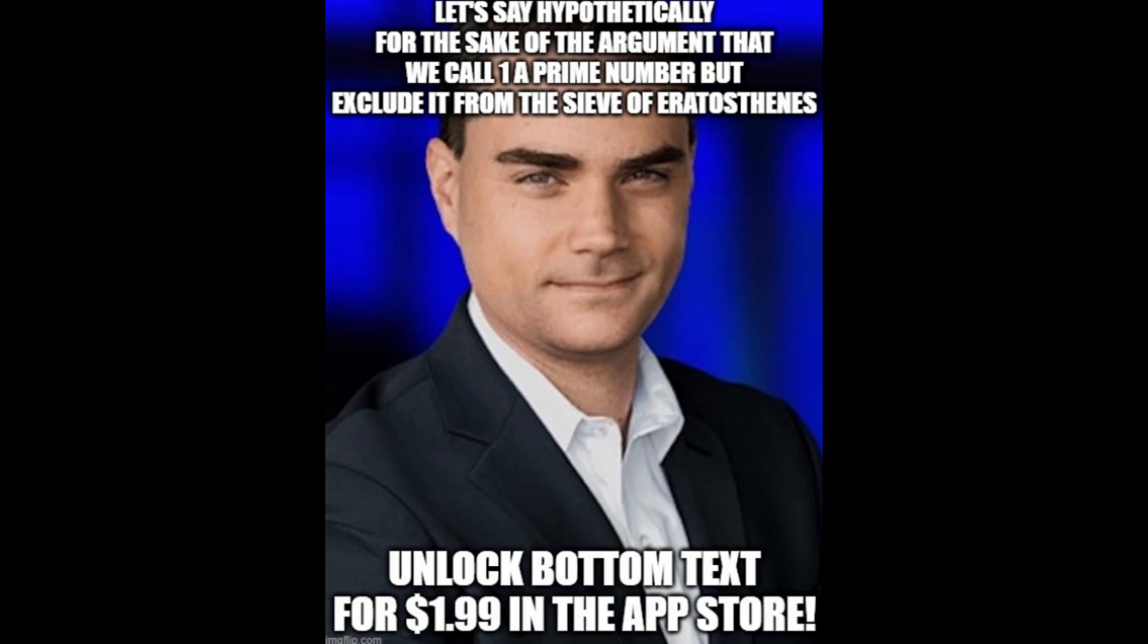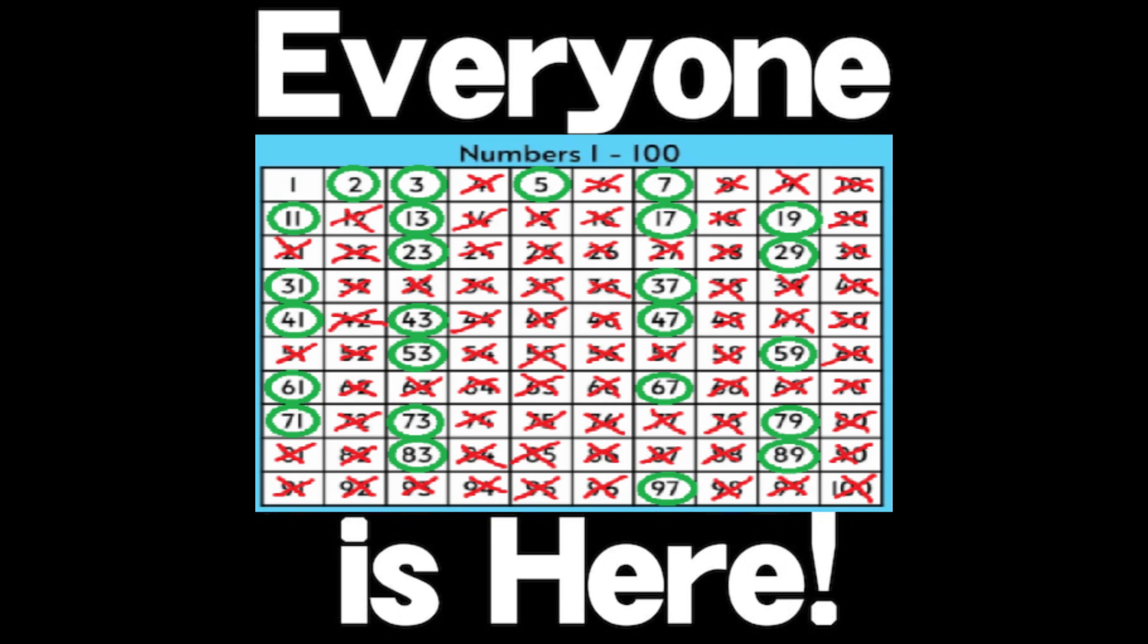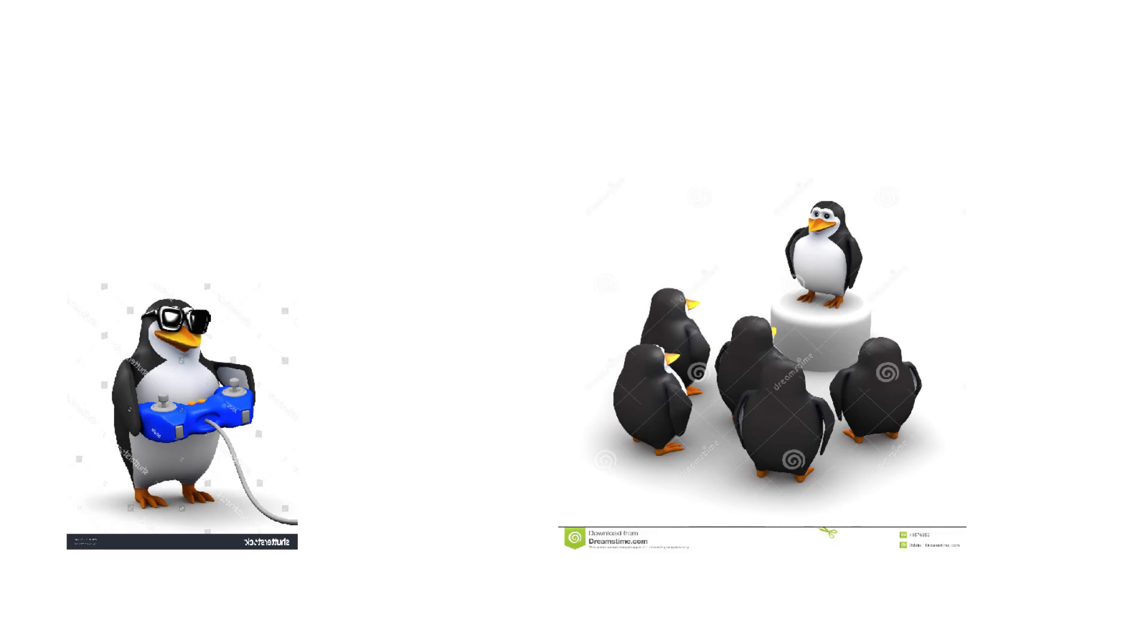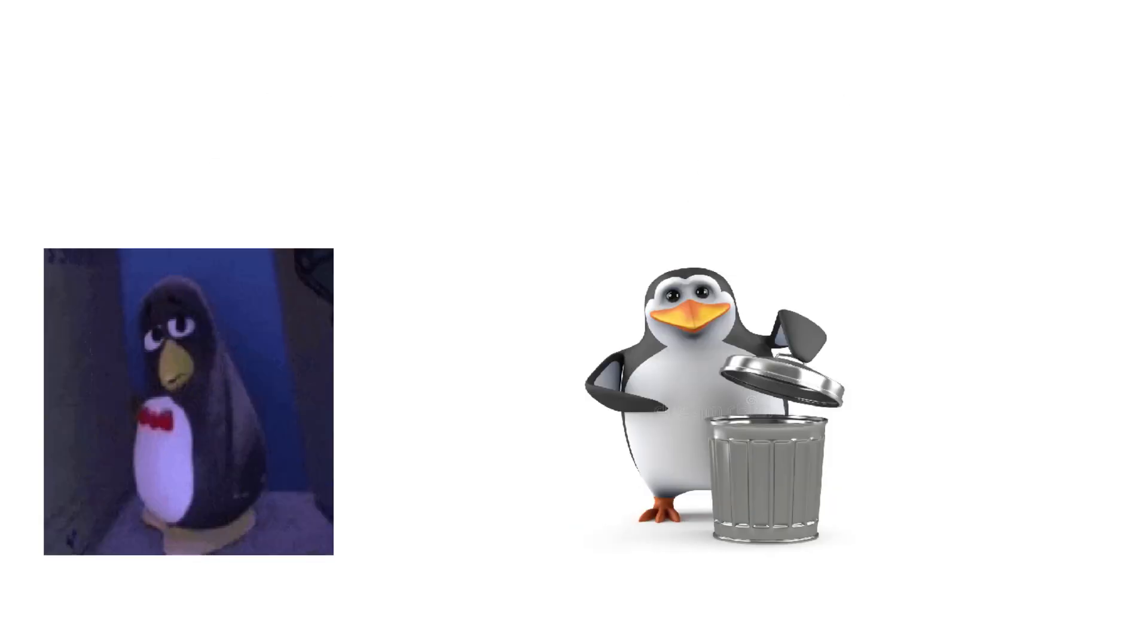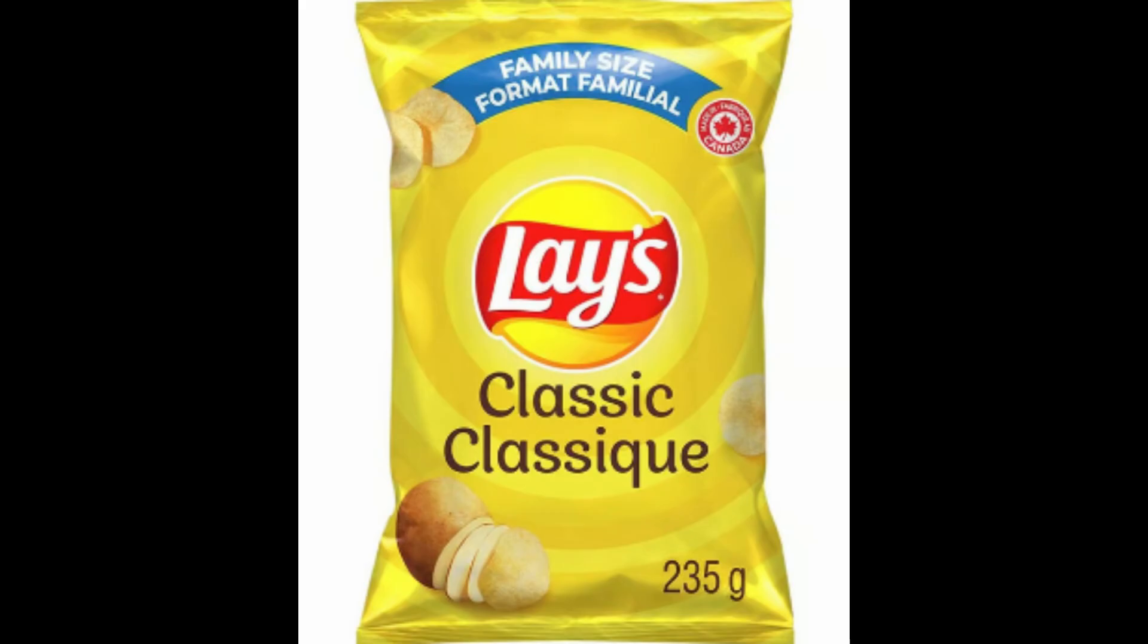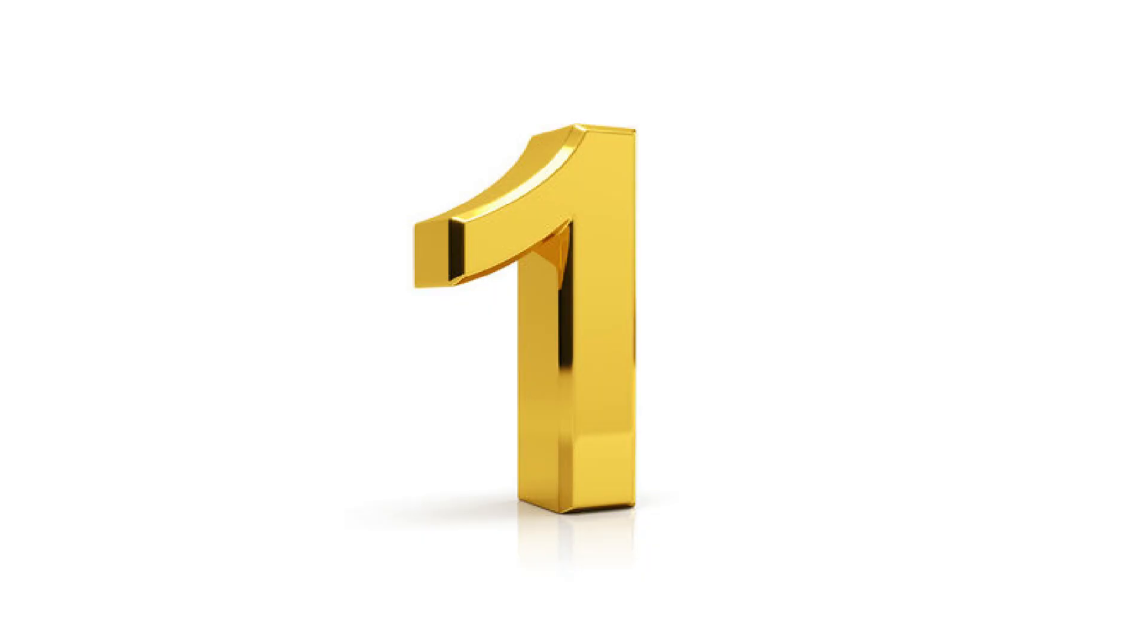Now that is definitely something that we don't want. And it would happen if we called 1 prime. But wait, I hear you again. Can't we call 1 prime but exclude it from the sieve of Eratosthenes? Why would we do that? The sieve of Eratosthenes is supposed to generate primes. If we have a number that we're calling prime, why would we exclude it? That's like excluding me from a convention of cool people, or excluding chips from a bag of lays.